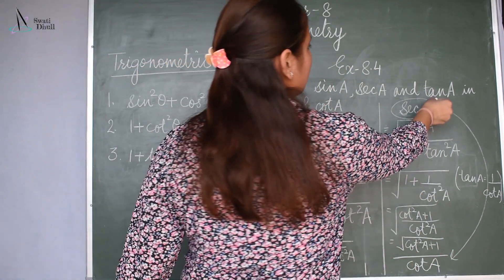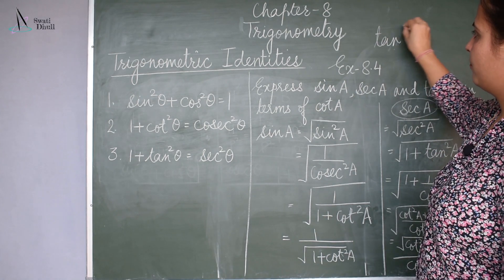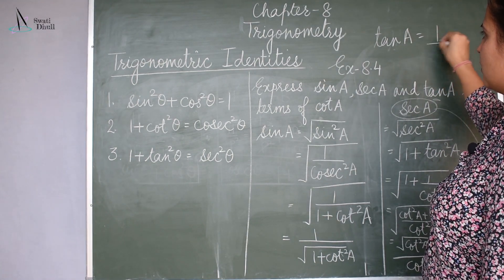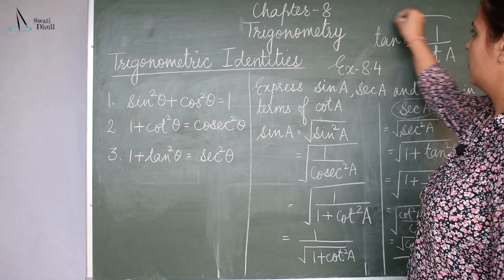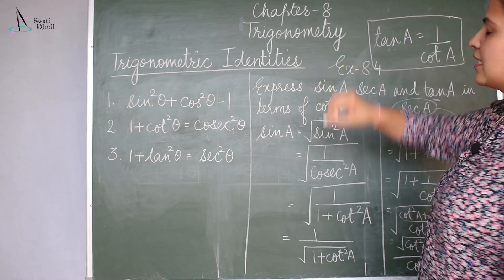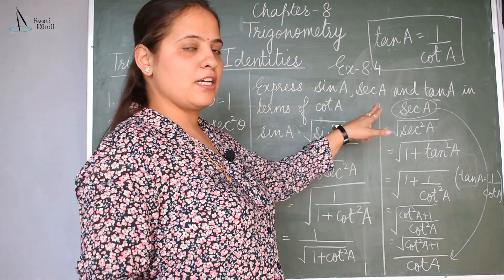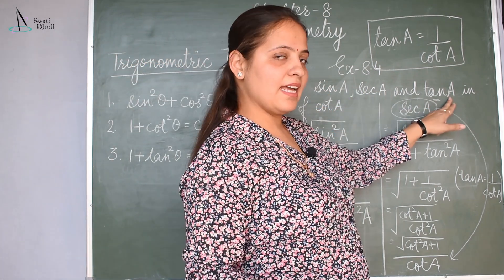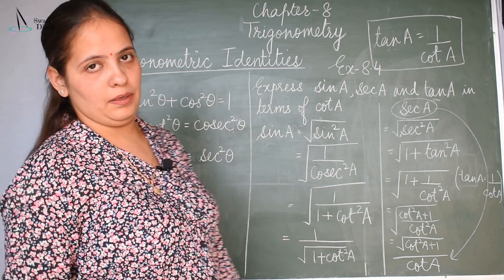Now what is remaining is tan A. Tan A can be written simply as 1 by cot A. We have simplified all three trigonometric ratios — sin, sec, and tan — in terms of cot A.